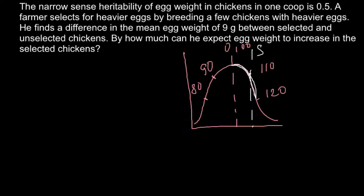We selected eggs between 100 and 120 grams, so the new mean would be about 110 — that is about 10 grams more than original. In our specific problem, this difference is 9 grams.